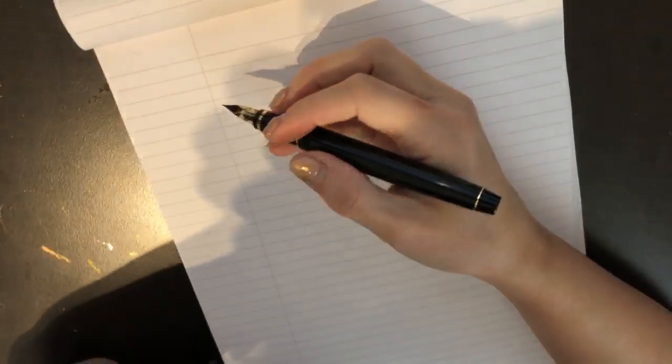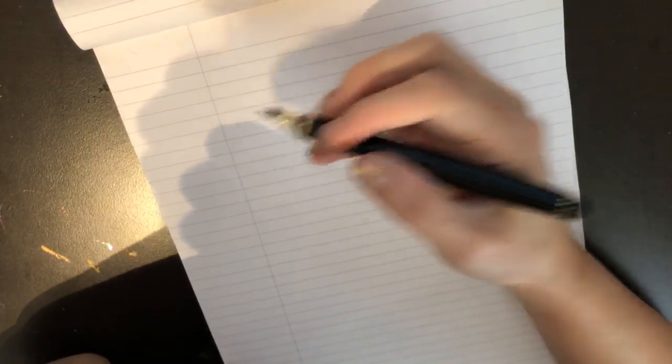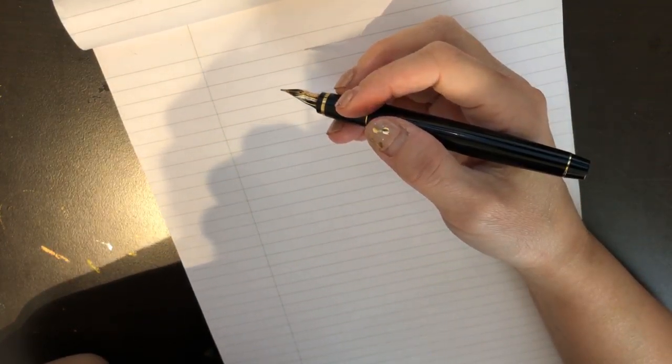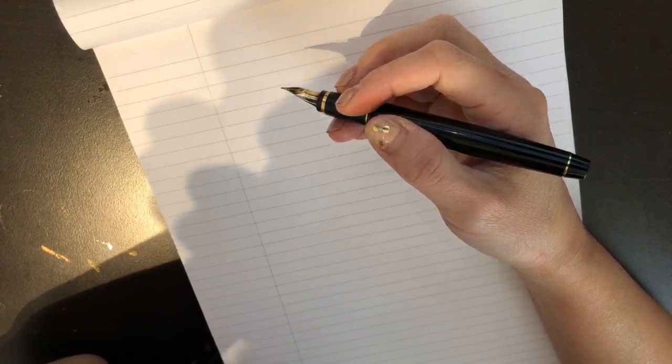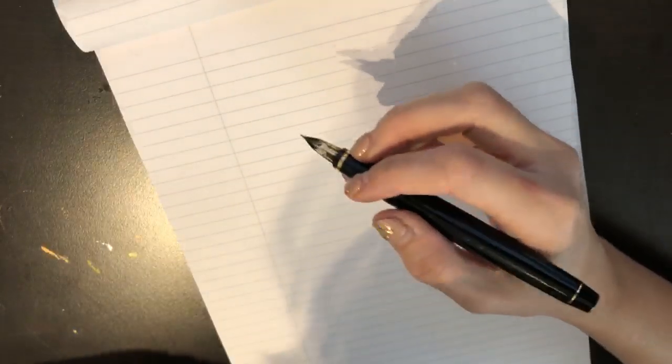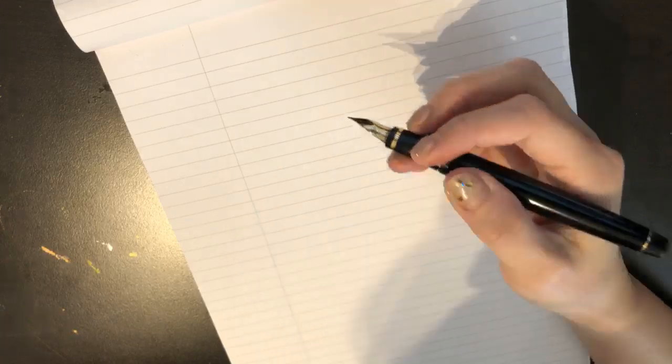So again, we're going to write the answer three times. And the only rule is don't think too much. Don't be like, hmm, what's my favorite fruit? And just think too much. Just write whatever. Okay. We just want to get things going. It's five o'clock. First question. What is your favorite fruit?